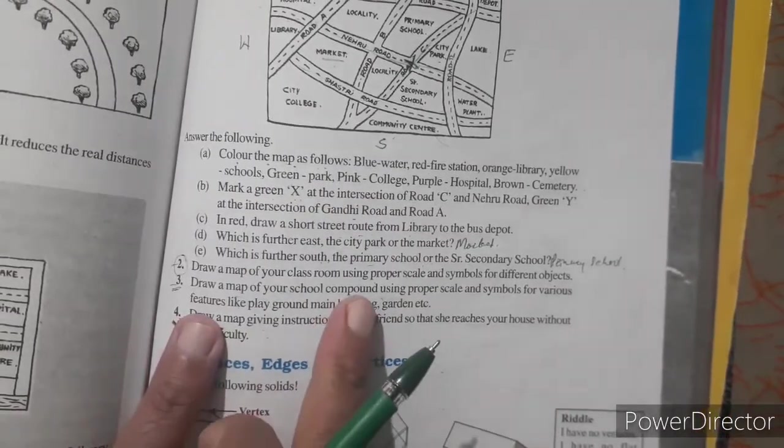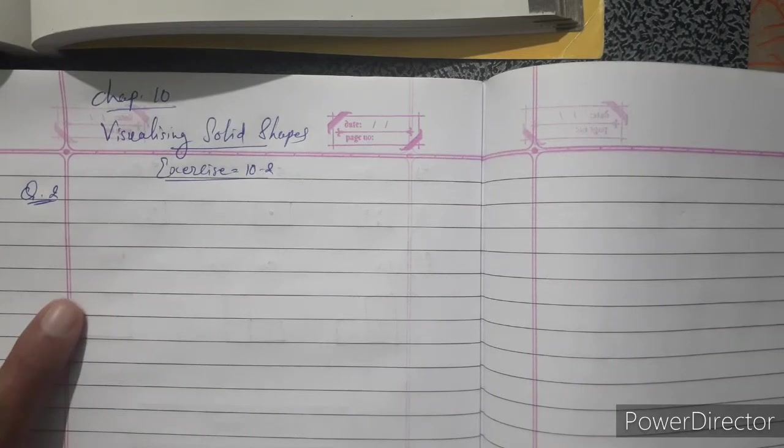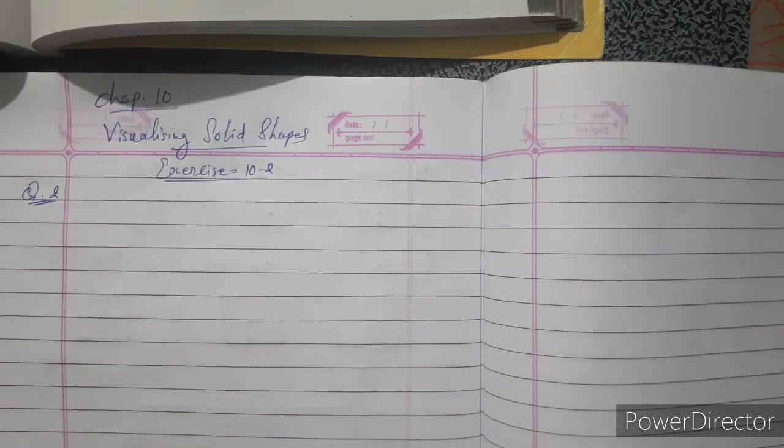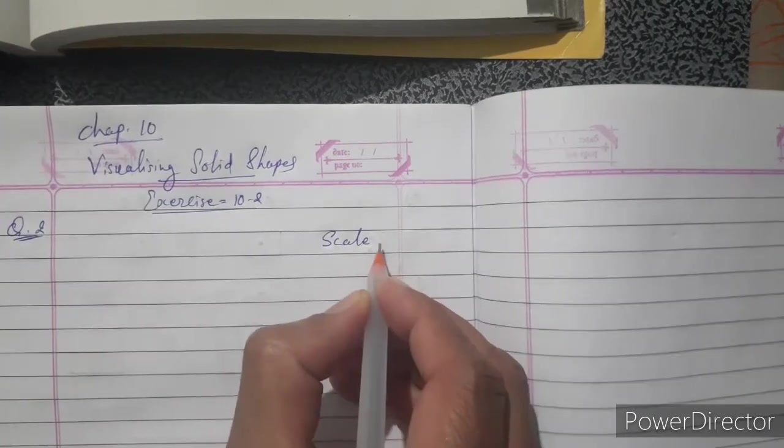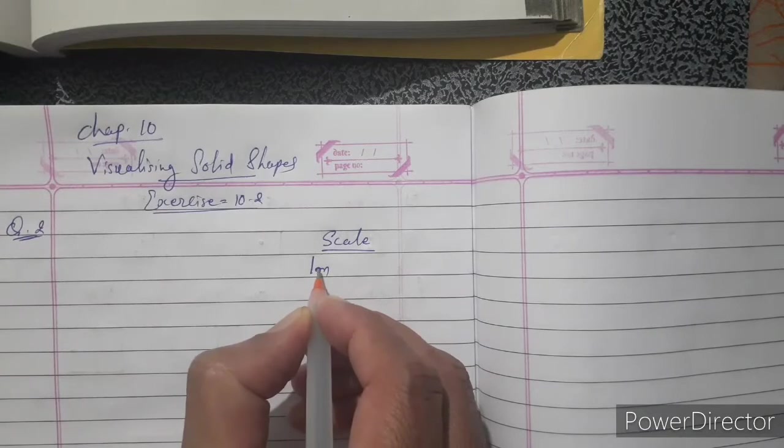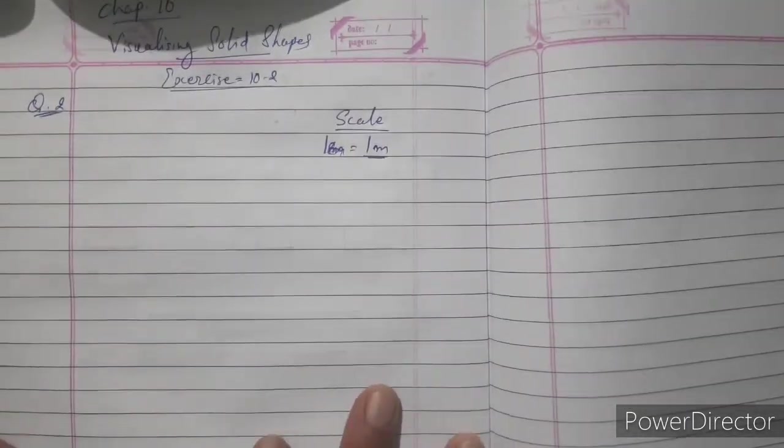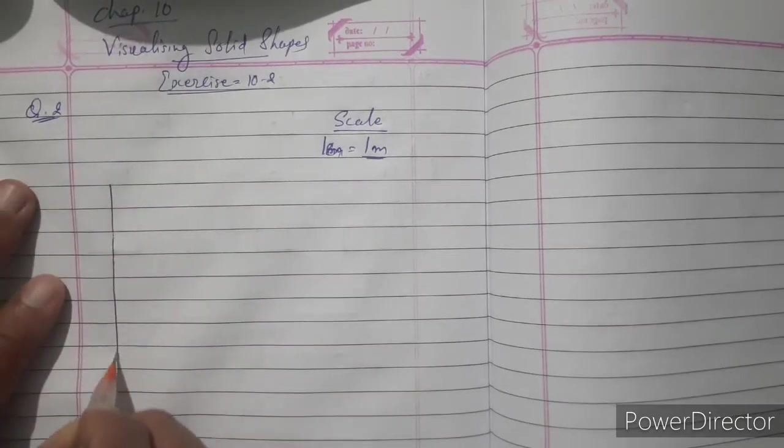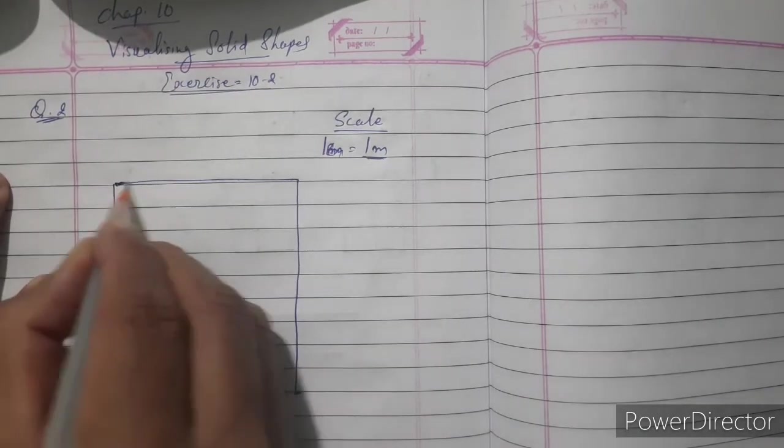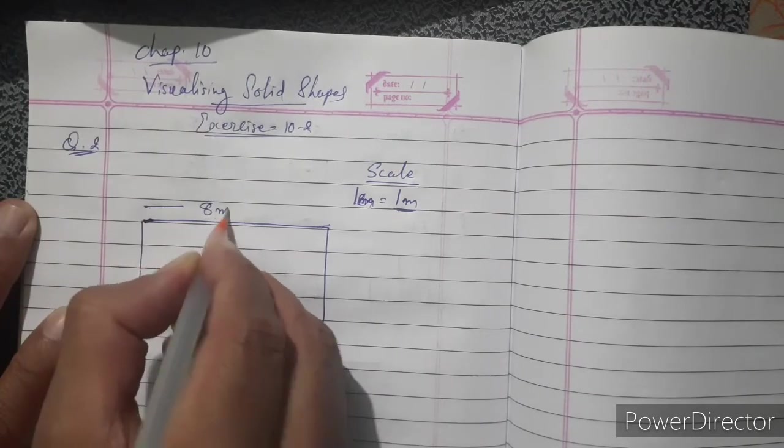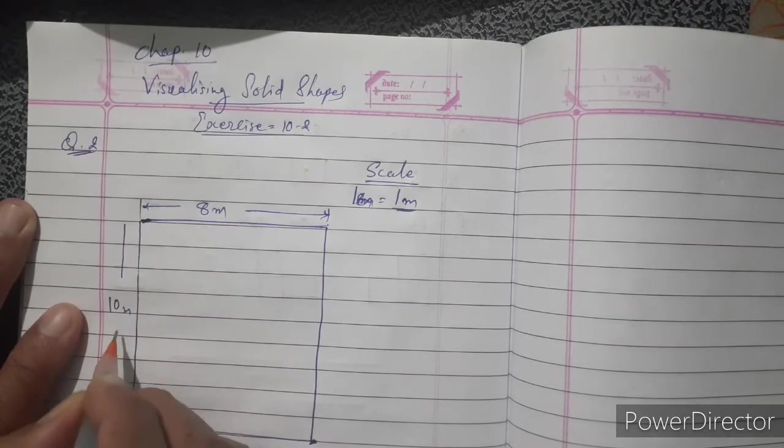So question number two is there. Draw a map using proper scale. I just directly make that map. You just use proper scale means scale and pencil and draw it properly. Now for that one we use the scale map. Scale is one centimeter equal to one meter. So our scale is, you just draw with proper pencil and scale. So length of that one is eight meter of our classroom and breadth is 10 meter.